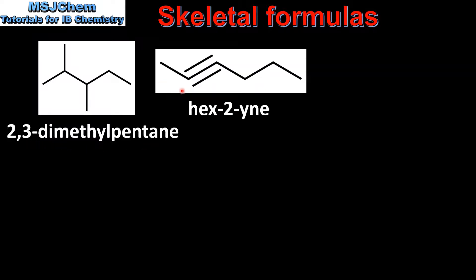Our next example is an alkyne due to the presence of a triple bond between carbon atoms. The longest continuous chain is six carbon atoms and the triple bond is between carbon number two and carbon number three. And the name is hex-2-yne.